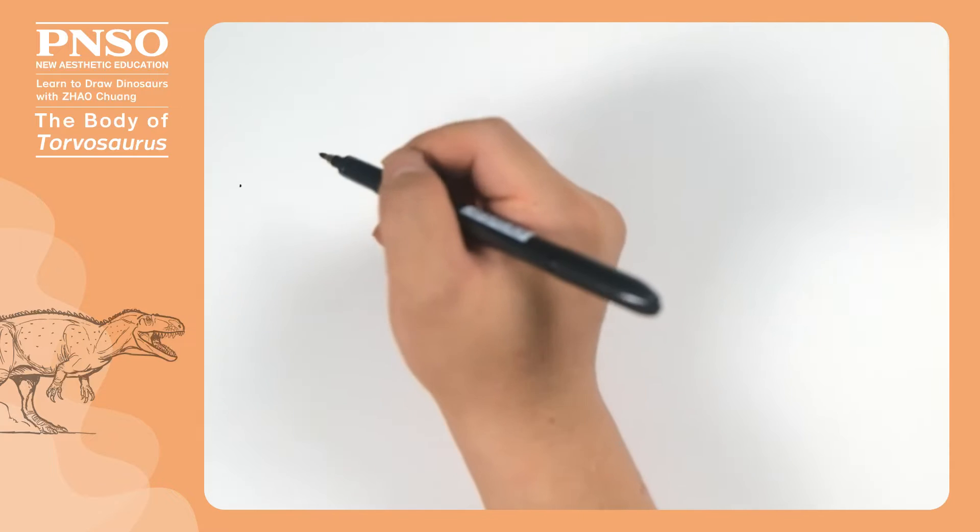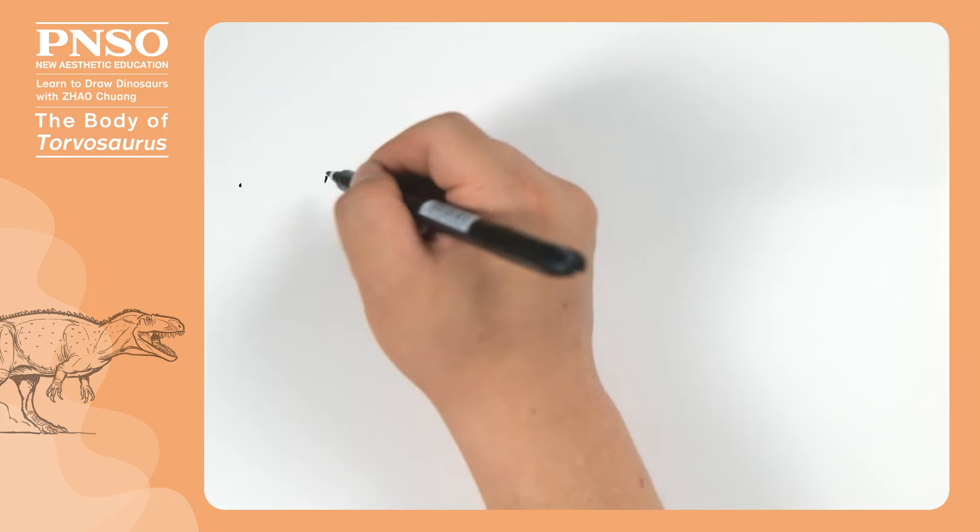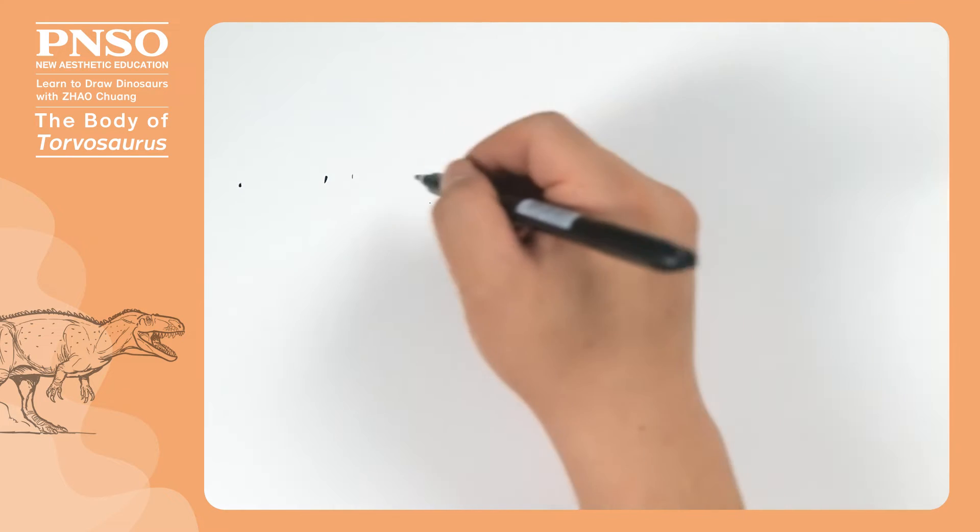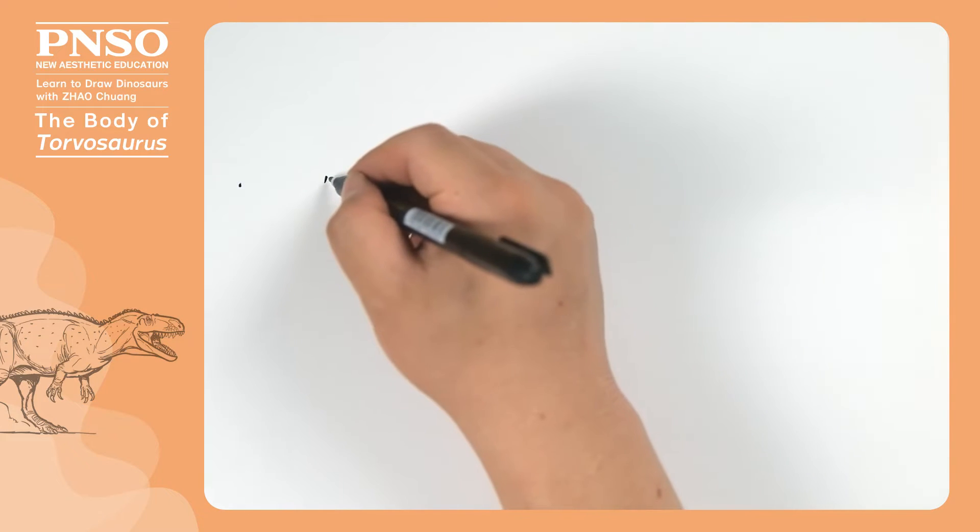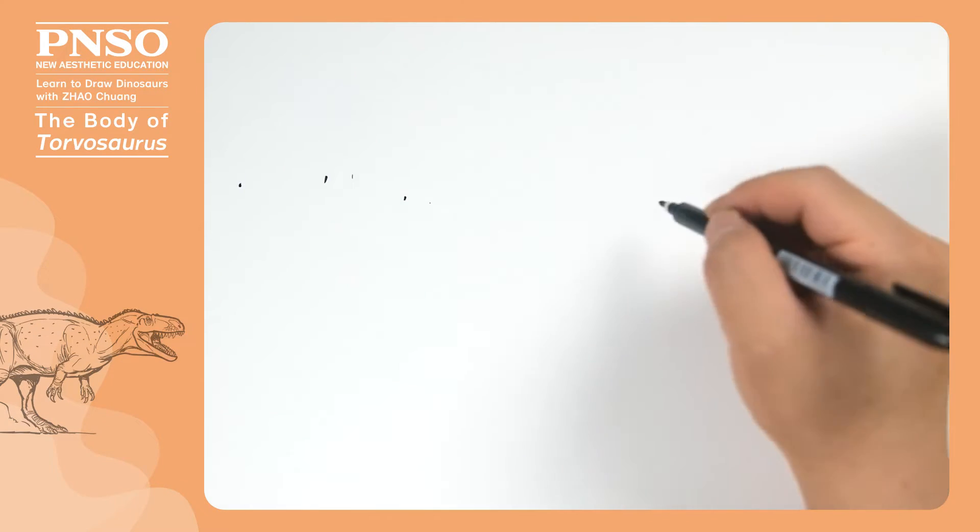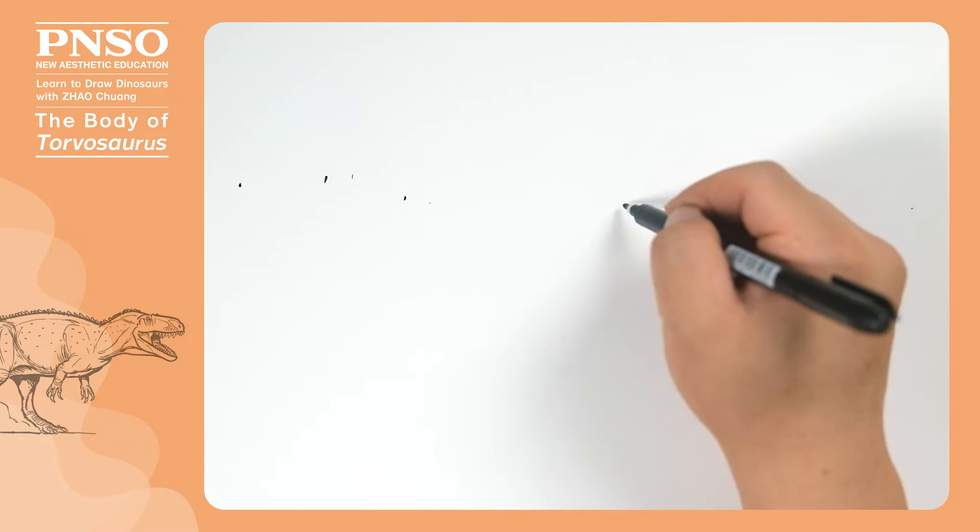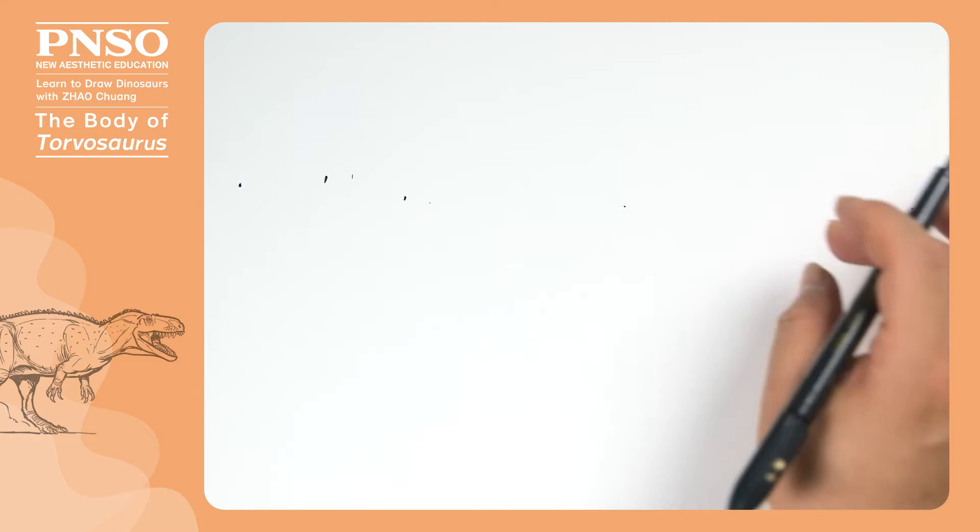First, determine the position of its head. We can set the head to be this big. Since its body and tail were relatively long, the head shouldn't look too big. Then move on to the neck, which was almost as long as the head, draw the neck until here. Moving backward, there would be its body and tail. We can make its tail swing slightly to the back, so that it would look a bit shorter, starting with the head.